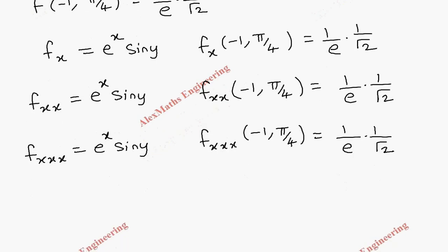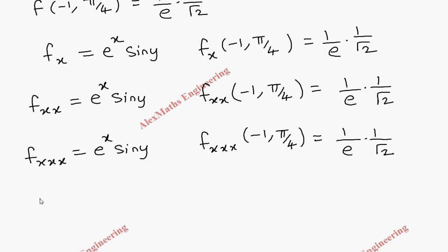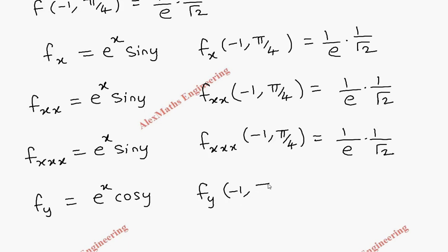Now we have to find fy. This is partial differentiation with respect to y. E power x is constant, and sin differentiation is cos y. Now fy of minus 1 comma pi by 4 gives e power minus 1, which is 1 by e, into cos pi by 4, which is 1 by root 2.